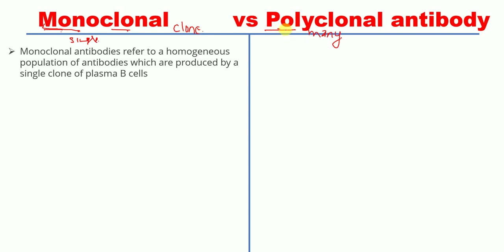Monoclonal means single clone — 'mono' means single and 'clonal' means clone. Monoclonal antibodies refer to a homogeneous population of antibodies which are produced by a single clone of plasma B cells. They are homogeneous because they originate from that single clone.